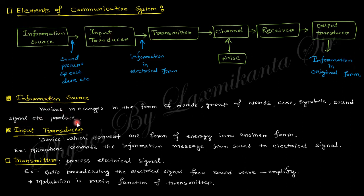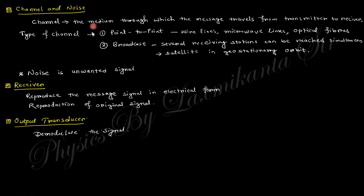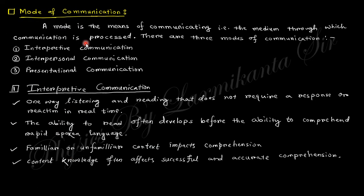The information source is where information originates, then the transducer converts it, then transmission, then the channel — during which noise is introduced — and then the receiver and output transducer. Next is mode of communication. Mode means the medium through which communication is processed. There are three modes of communication: interpretive communication, interpersonal communication, and presentational communication.